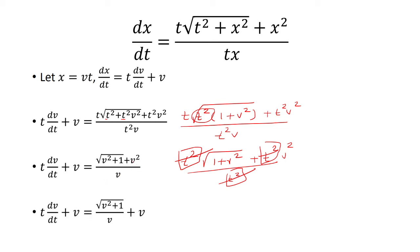And here, I can break this up into two fractions. The first fraction will be square root of v squared plus 1 over v. The second fraction is v squared over v.